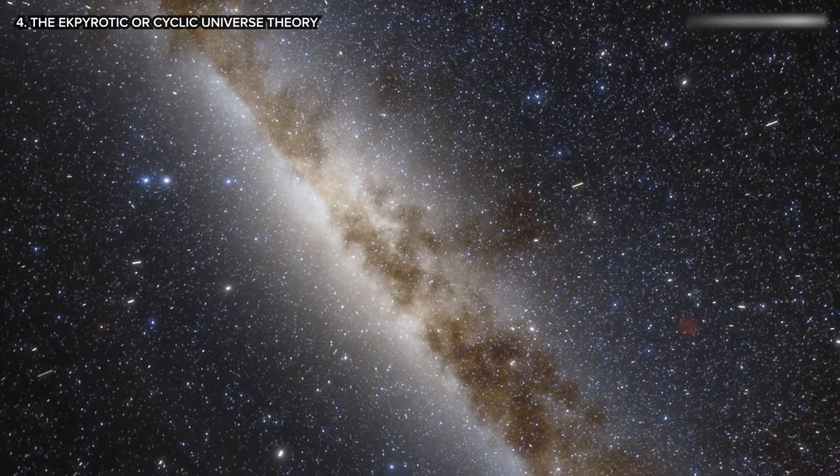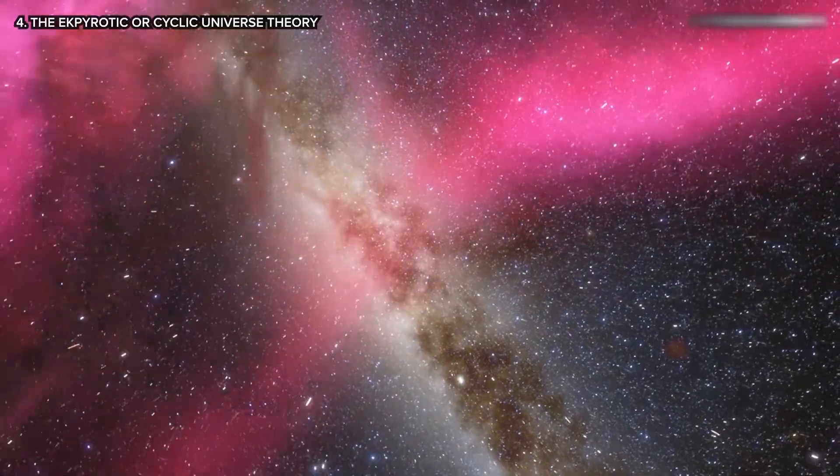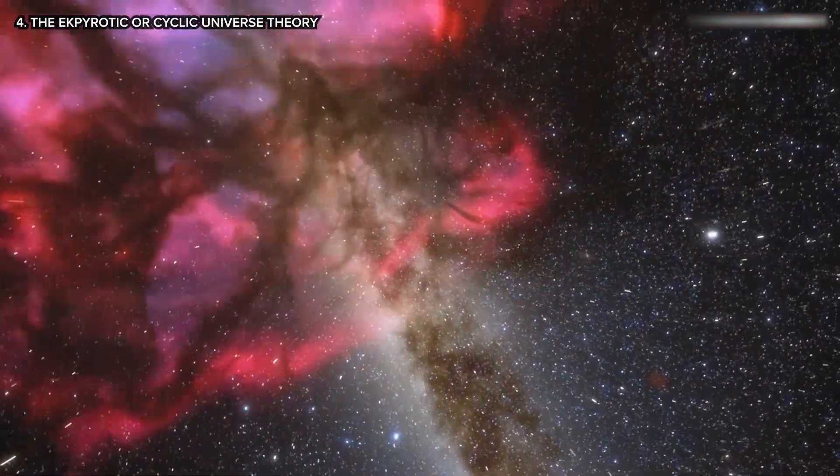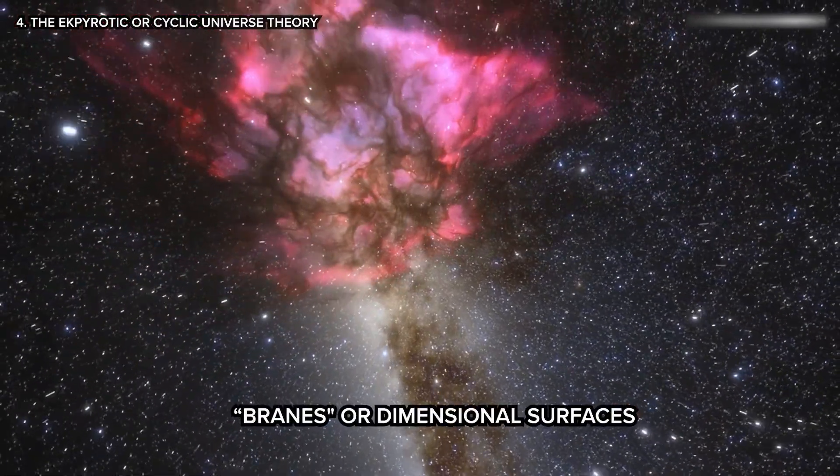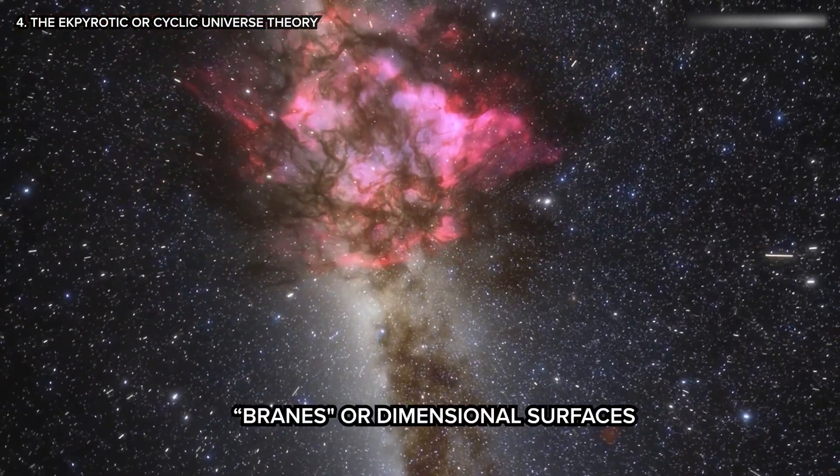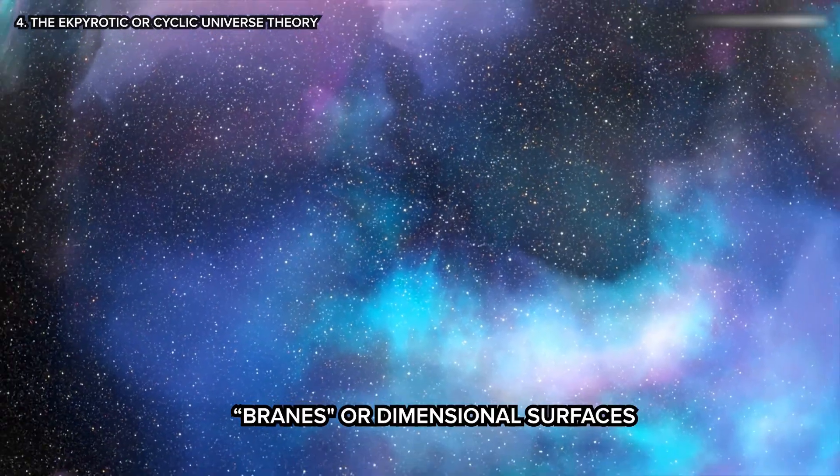The Ekpyrotic or Cyclic Universe Theory, also known as the Cyclic Model, suggests that our universe could be part of a larger structure with multiple branes or dimensional surfaces existing within higher dimensional space.